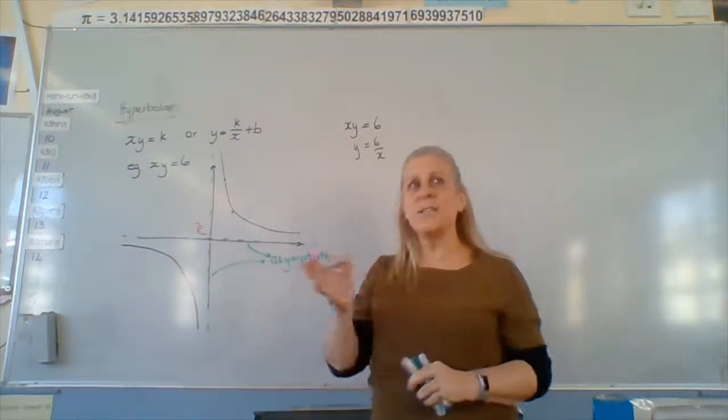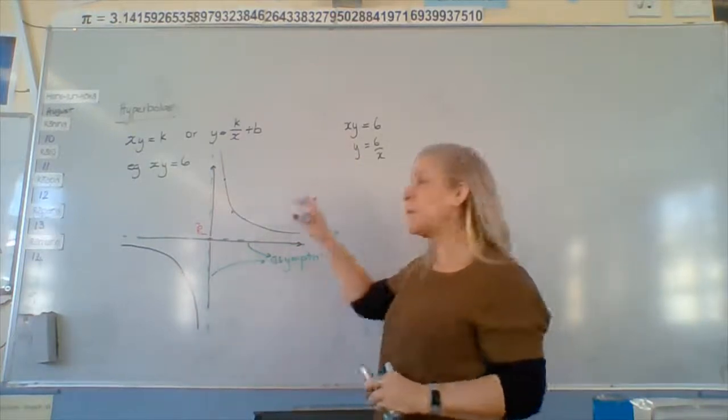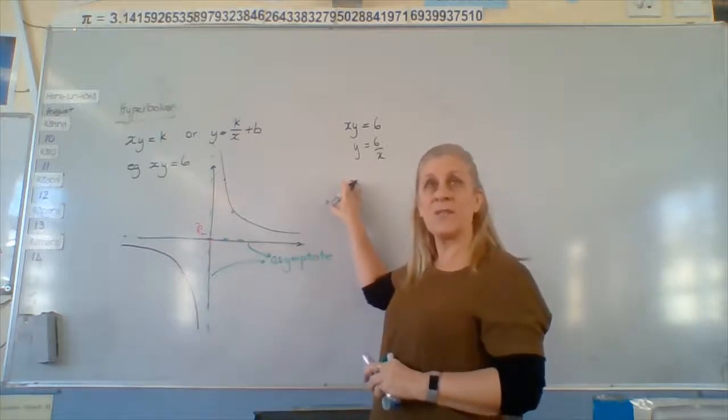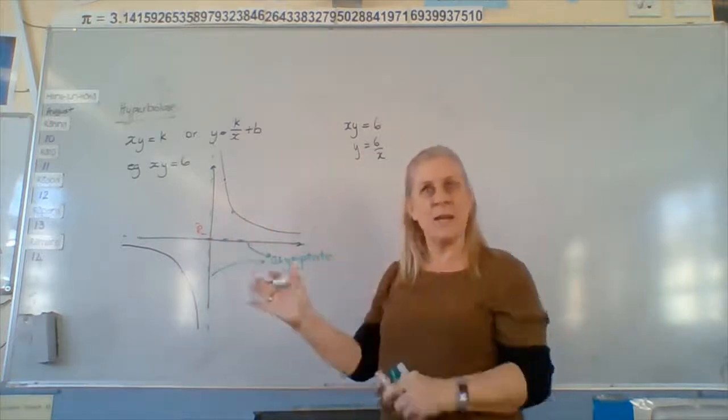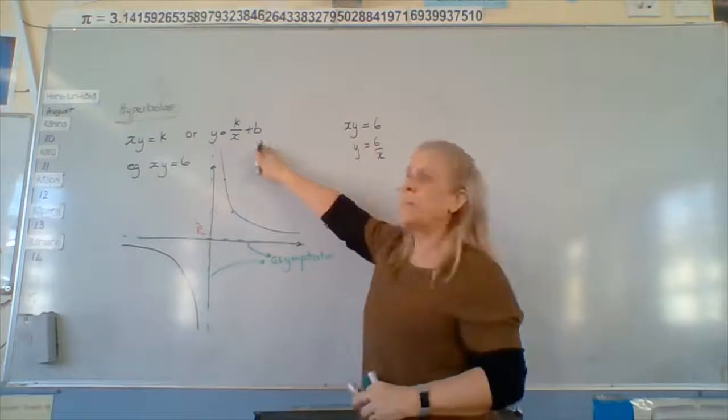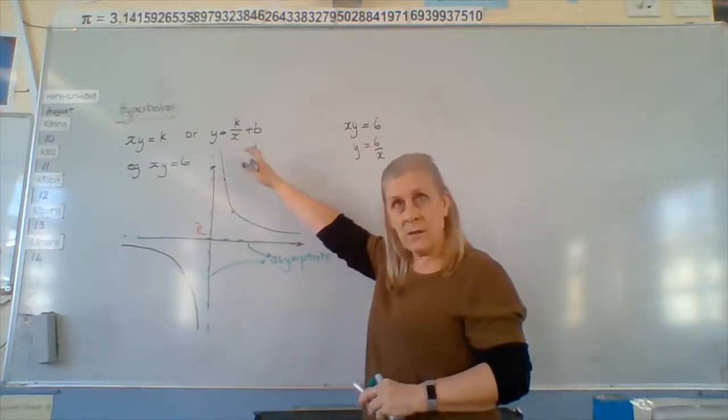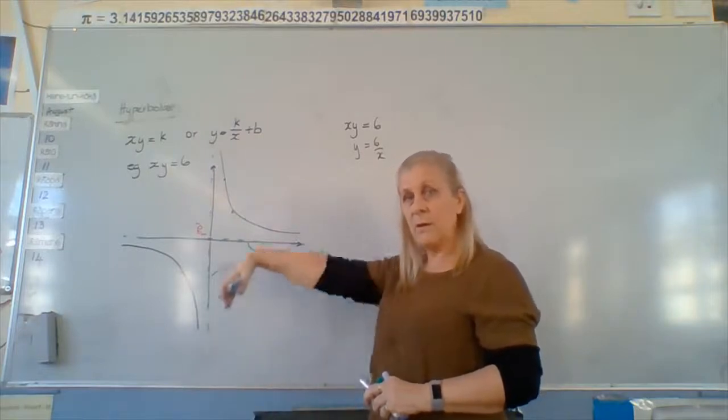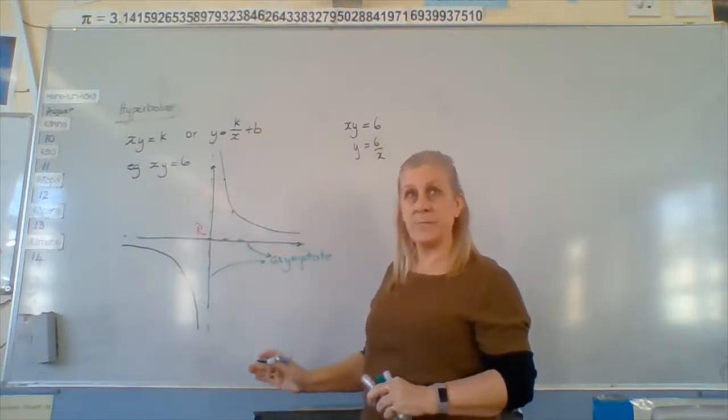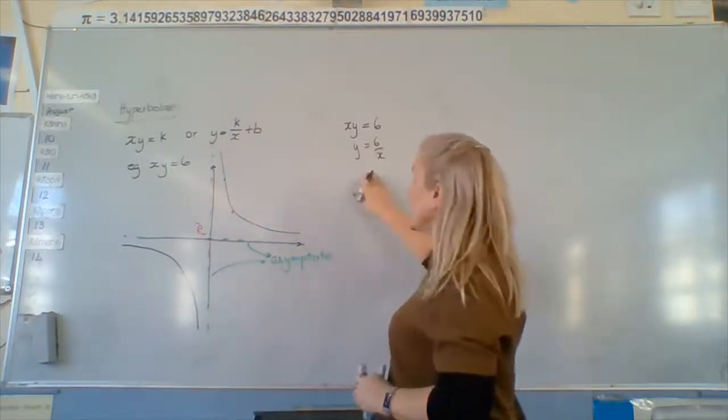But this one is not very easy to move. So we want it in this form, y equals, to translate around the place, up and across. That b is the same b we've been dealing with. What does b do? Moves it up and down. Right? So it's still going to move it up and down.